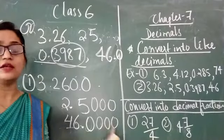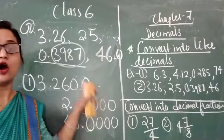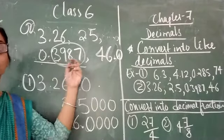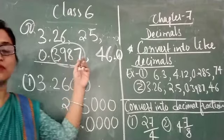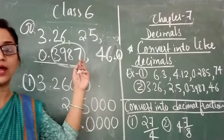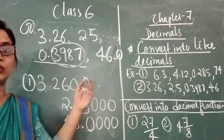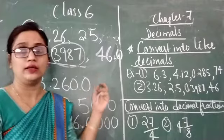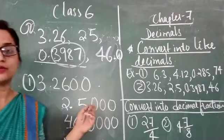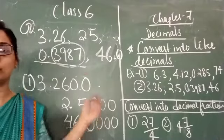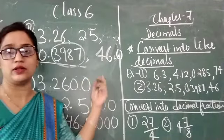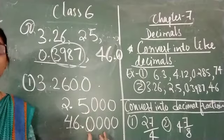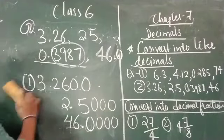So the method is: observe the maximum number of decimal place values and according to that, increase the zeros in the decimal place value of the other decimals given in the question.